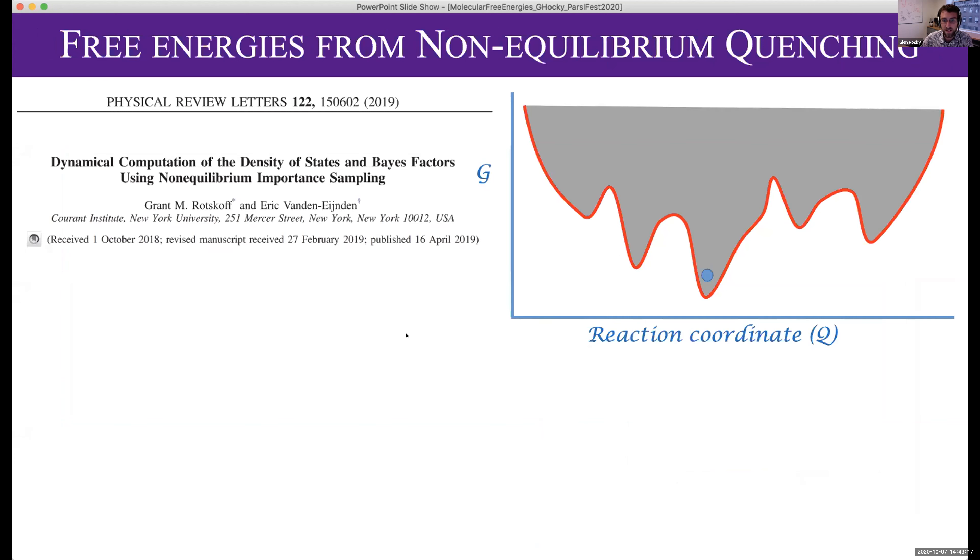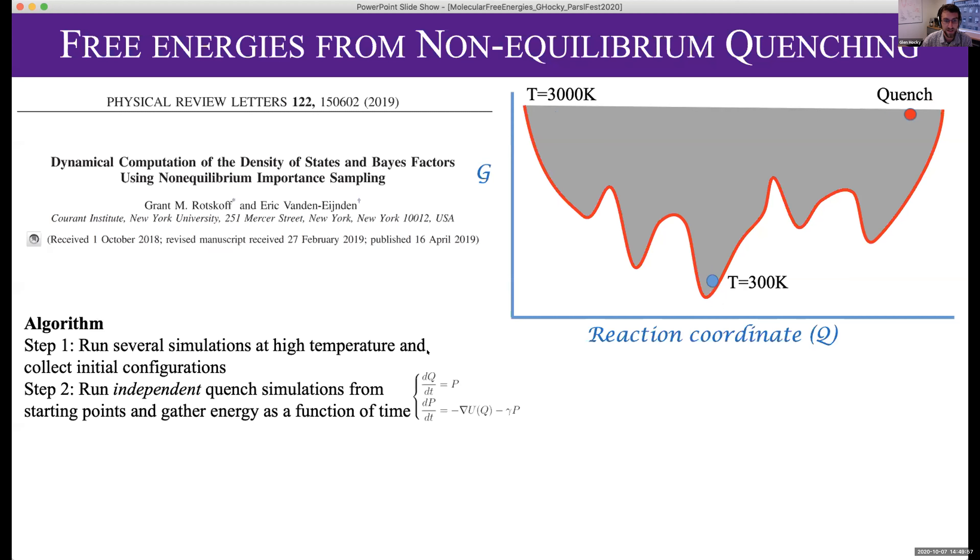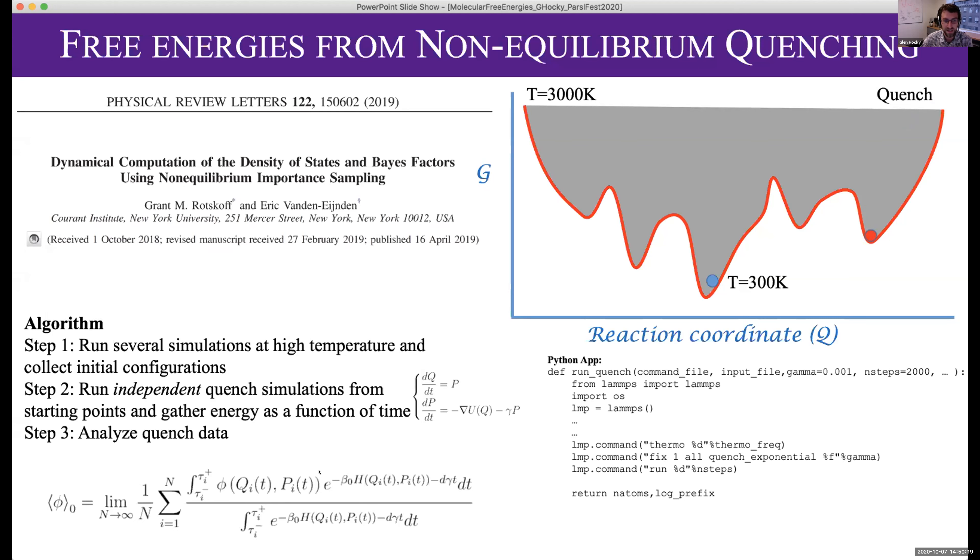We're developing a new method based on this PRL from last year. This is what Kangxin is working on. If we run a simulation at room temperature, 300 Kelvin, the particles will just jiggle around in the minima, and we want them to see other minima. The new method runs many simulations at high temperature where the thing can bounce around above high energies. Then we do something called quenching, a special way of doing energy minimization. We do that with a Python app in PARCEL which uses the Python interface from LAMPS so we can extract energies while this is happening. The energy goes down and the molecule falls into some minimum.